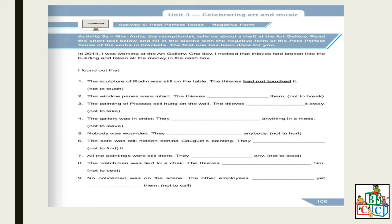They [had not found] it. All the paintings were still there — they [had not stolen] any. The watchman was tied to a chair — the thieves [had not harmed] him. No policeman was on the scene — the other employees [had not alerted] them yet. So in this exercise, you have to fill in the blanks with the negative form of the past perfect tense.